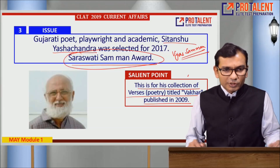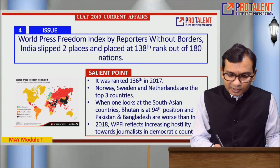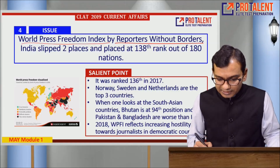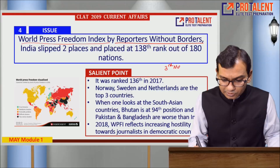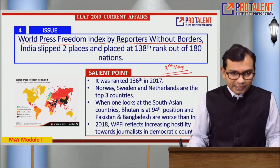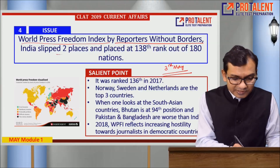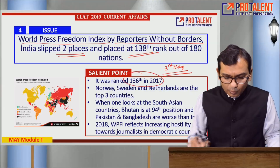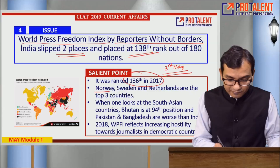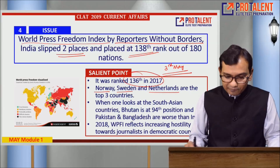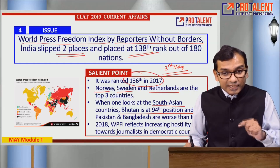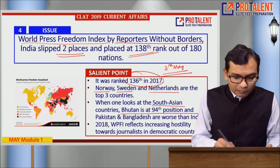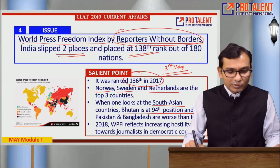Point four: the World Press Freedom Index by Reporters Without Borders. World Press Freedom Day is celebrated every year on May 3rd. In this index, India has slipped two places and is now placed at 138th out of 180 nations — last year India's rank was 136. The top countries are Norway, Sweden, and Netherlands. Among South Asian countries, Bhutan is in a better position than India, while Pakistan and Bangladesh are ranked worse.